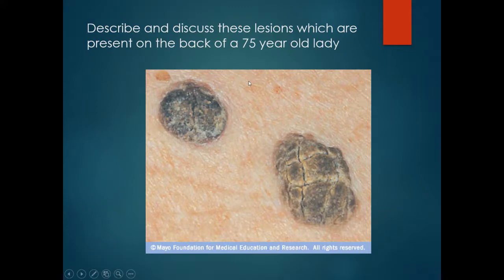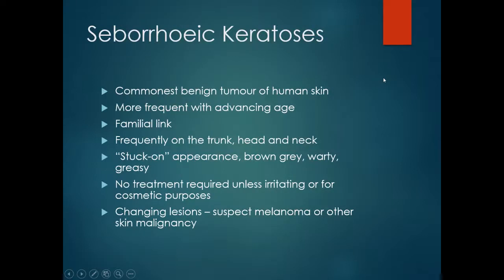Describe and discuss these lesions which are present on the back of a 75 year old lady. These are stuck-on, brown, rough lesions. These are benign seborrheic keratoses.